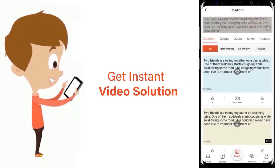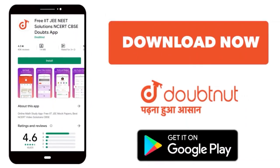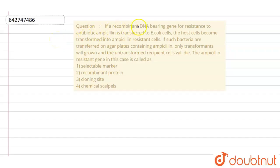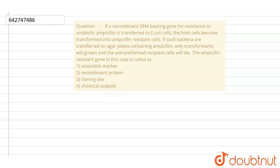Our question says: if a recombinant DNA bearing a gene for resistance to the antibiotic ampicillin is transferred to E. coli cells, the host cell becomes transformed into ampicillin-resistant cells. If such bacteria are transferred on agar plates containing ampicillin, only transformants will grow and the untransformed recipient cells will die. The ampicillin-resistant gene in this case is called: option one — selectable marker, option two — recombinant protein, option three — cloning site, or option four — chemical scalpels.